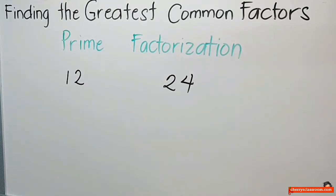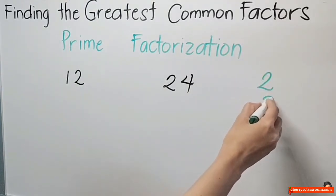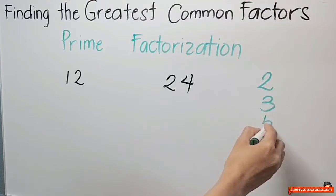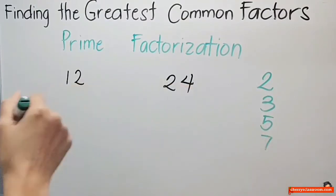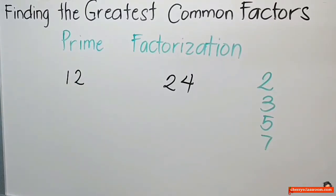So, kung napapansin nyo, pag sinabi natin yung prime factor, isipin mo yung mga maliliit lang. Pilit ka doon kasi usually, ano naman yan eh? Ay 2, 3, 5, 7. So, pumili ka lang dyan. Ang 12 ay pwede kong i-divide sa 2, tama? So, 2 times 6 equals 12.